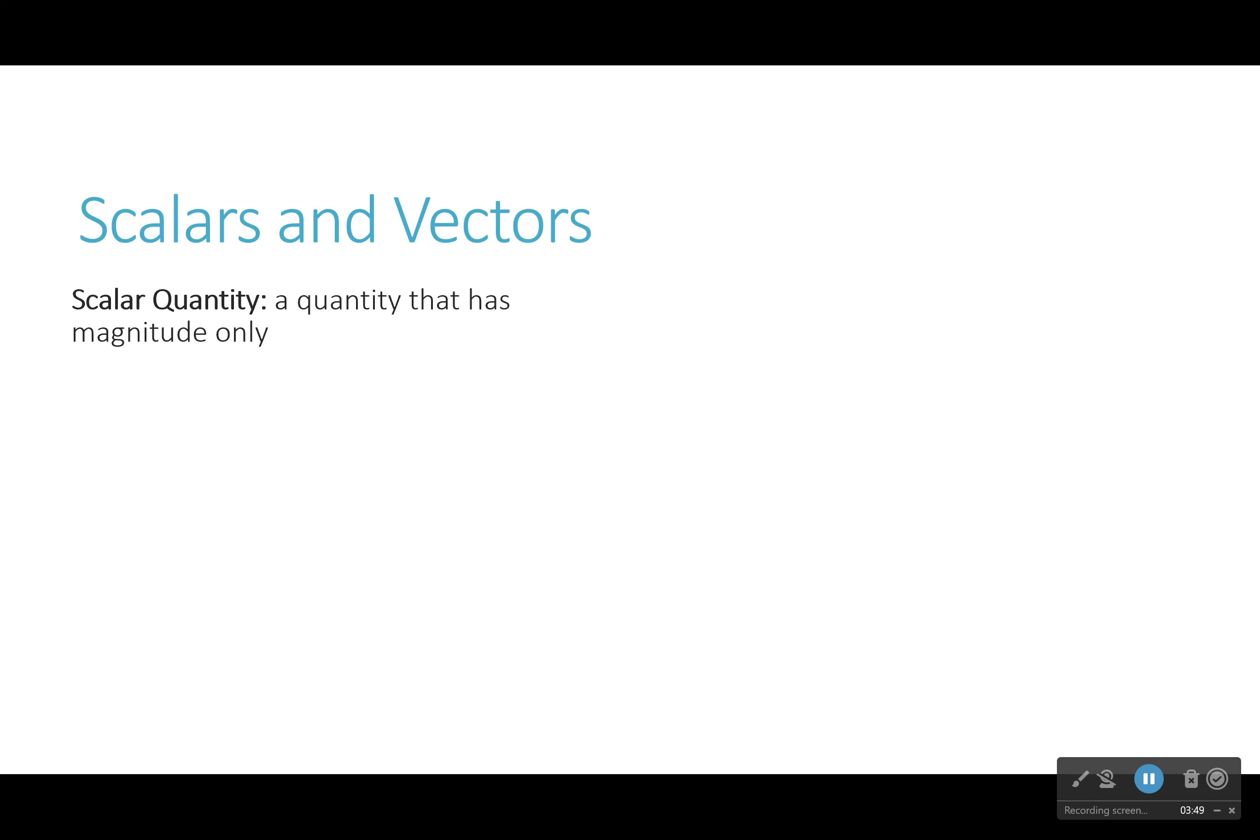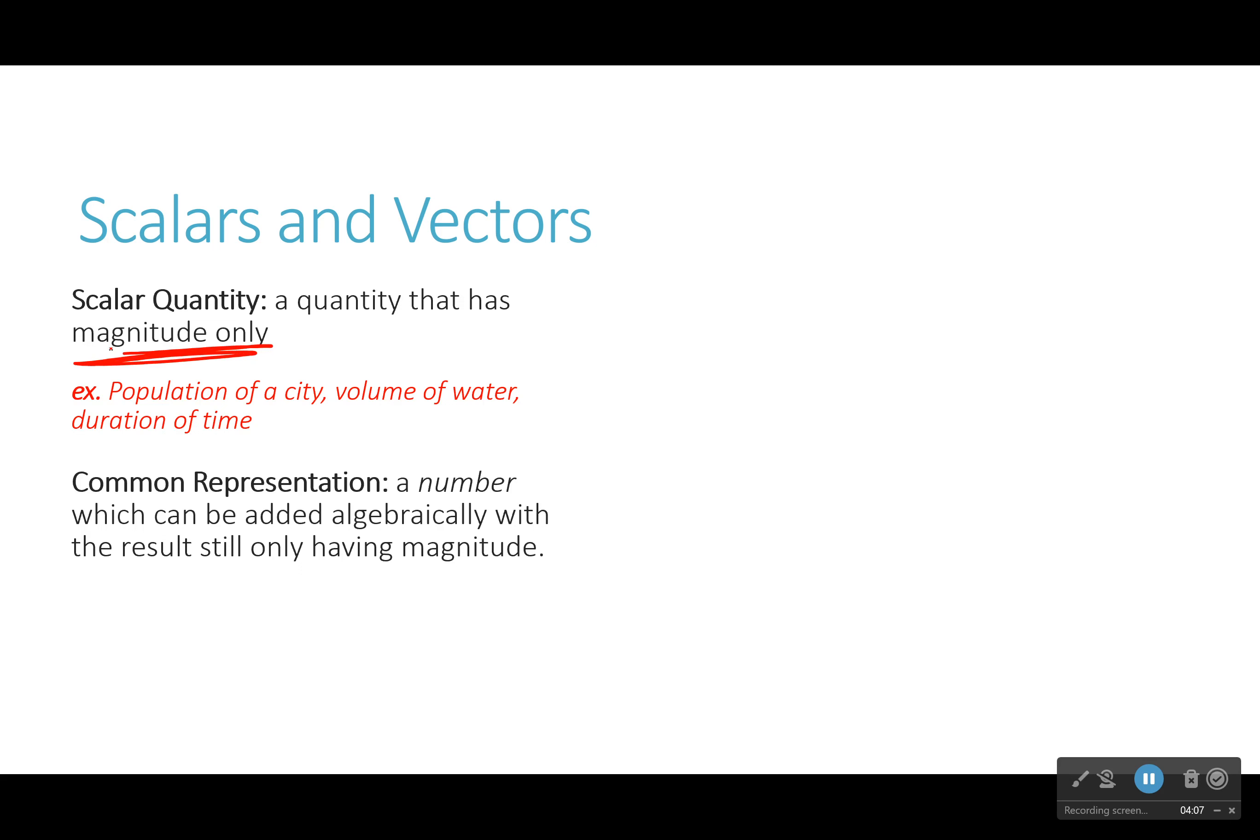So scalars and vectors. So far I've been talking about force as a vector. However, you might be thinking, well, when I tell my weight, I don't really care the fact that my weight is pointing down. Like your weight, it technically is pointing down, but you just give a number. So a scalar quantity is a quantity that has magnitude only. That means it's just a number, no direction.